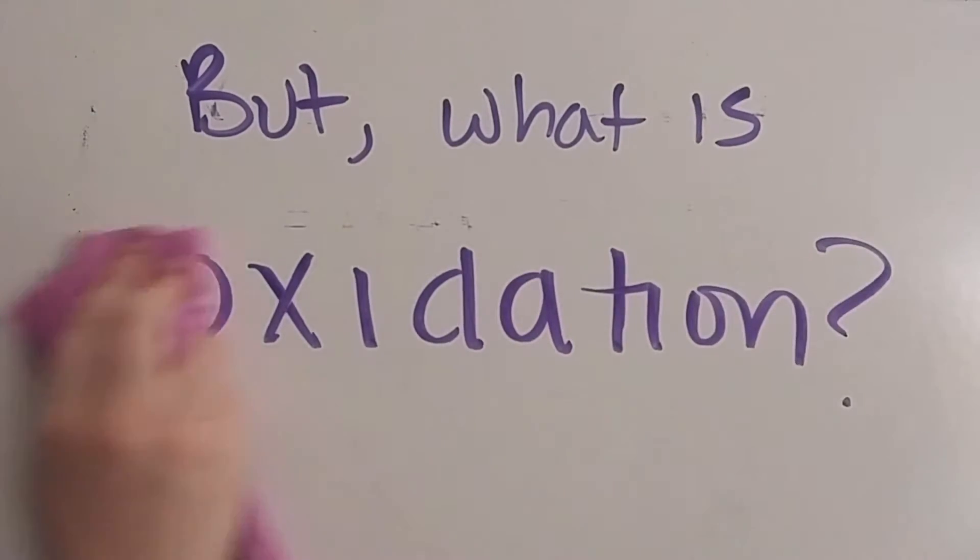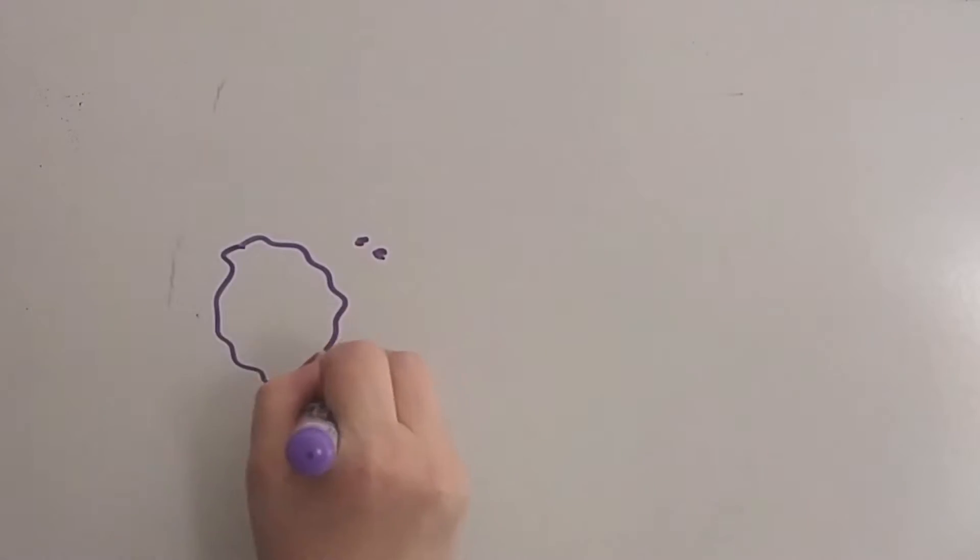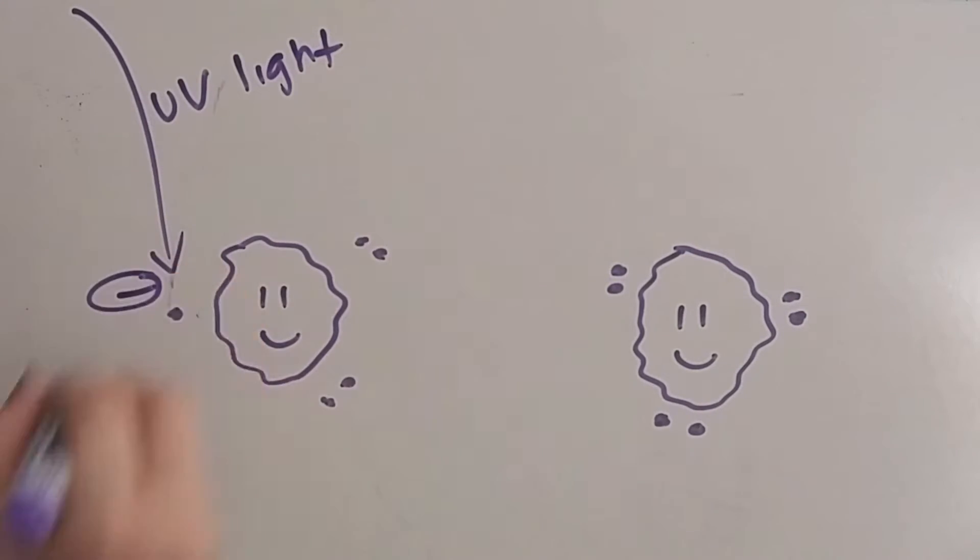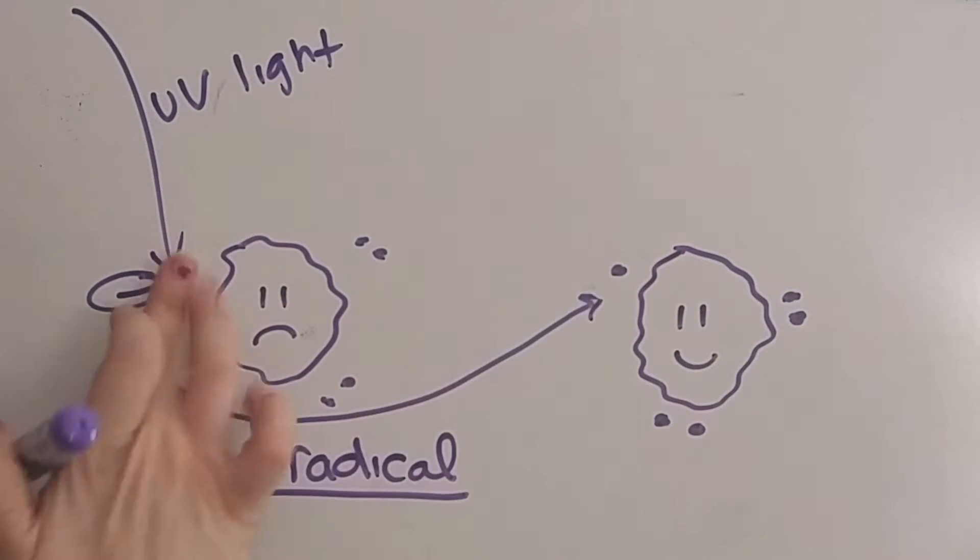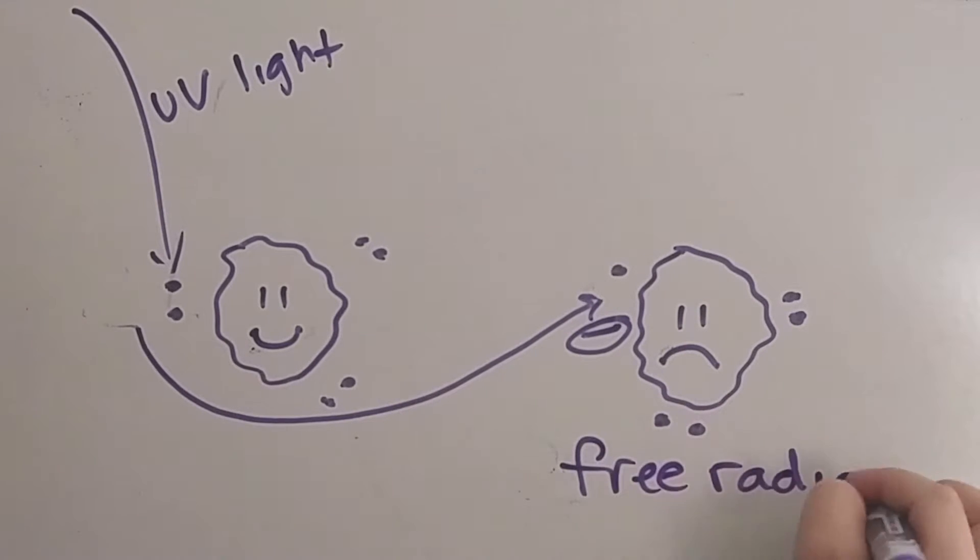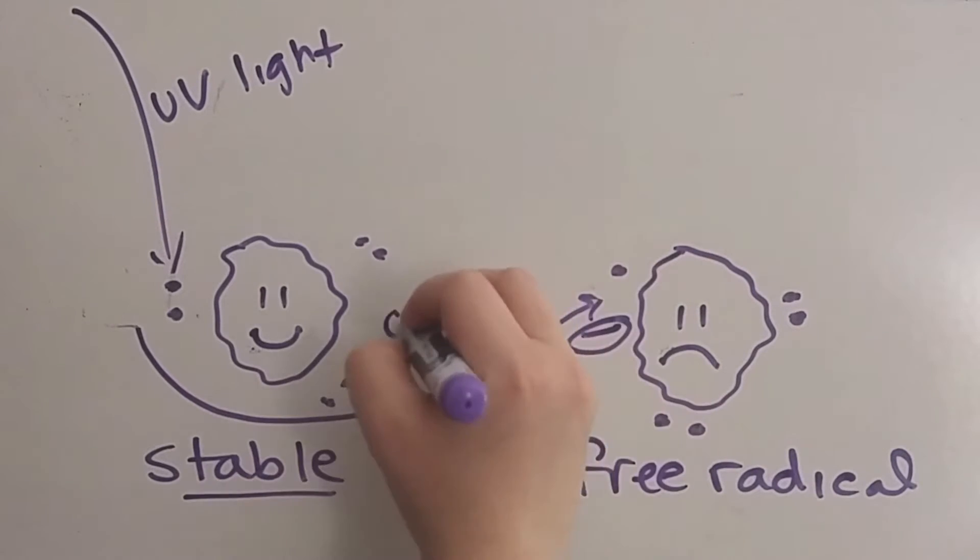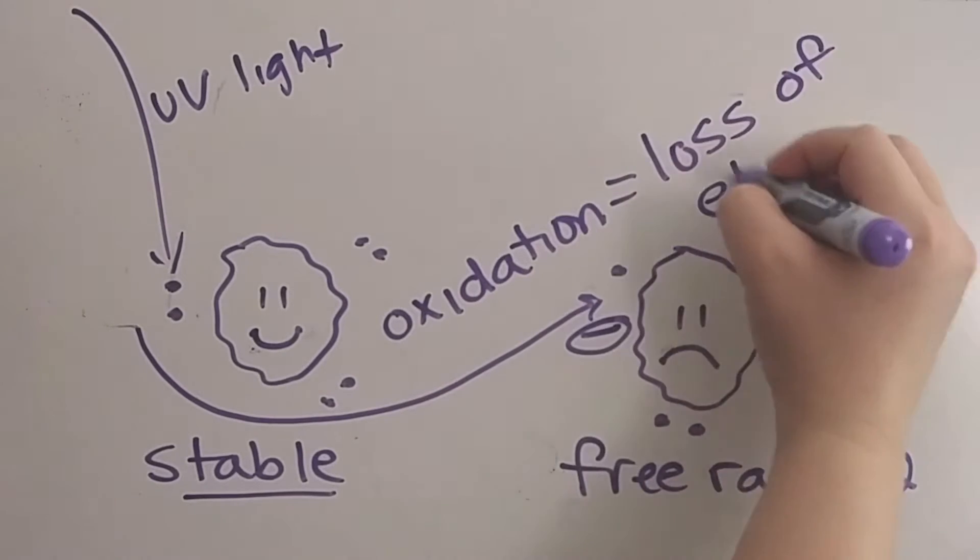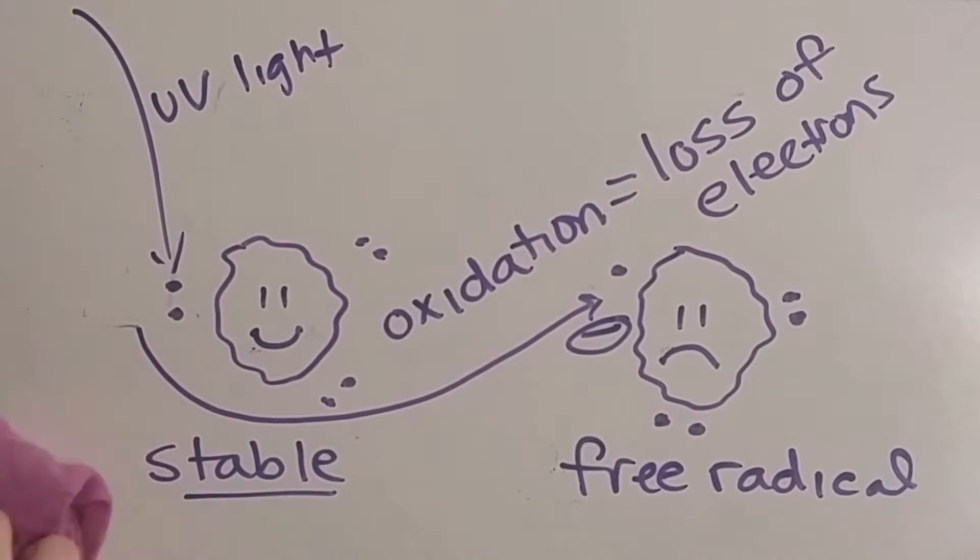Put simply, it is when one molecule steals an electron from another molecule. Atoms and molecules don't like to be missing electrons. In this state, they are called free radicals. Much like how misery loves company, damaged molecules cause damage to other molecules. Free radicals are very reactive and readily engage in these damaging chain reactions.